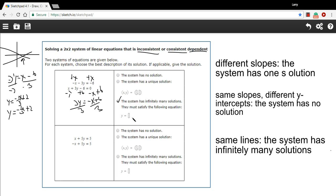So that's the situation where the system is dependent, and it has infinitely many solutions. And then part of this question says they must satisfy the following equation. Which equation must they satisfy? Well, we just figured that out. It's y equals negative one-third x plus 2.